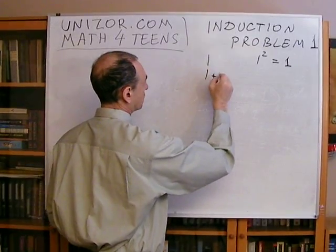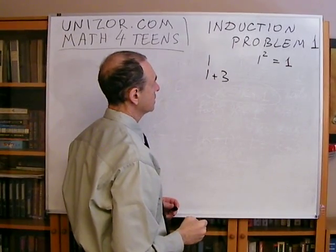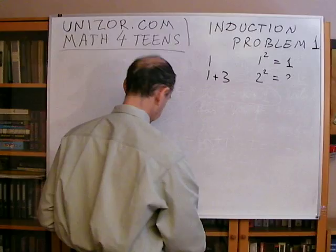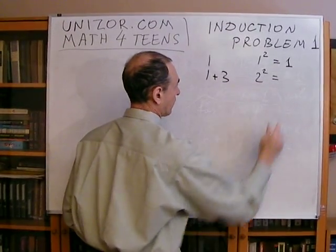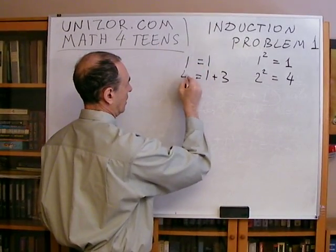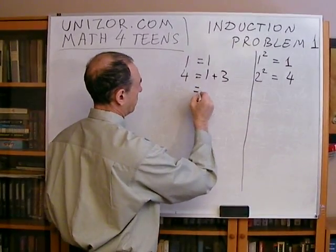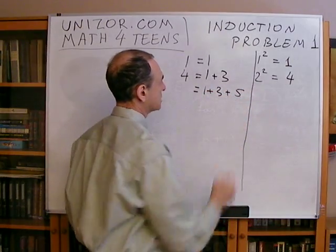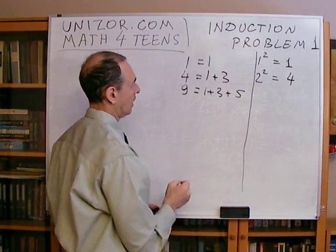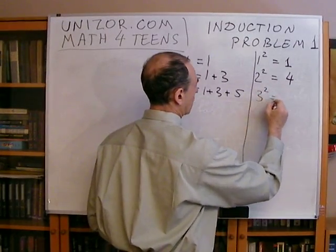Now, if you have a sum of one and three, the number of these members in this sum is two. And if you square two, it will be four. This is four. Let's take the next odd number: one, three, and five. It's nine. Now, the number of these members in the sum is three, and three squared is nine again.